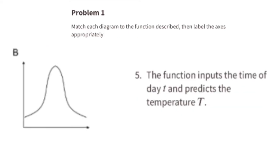Diagram B matches function 5. The function inputs the time of day, lowercase t, and predicts the temperature, capital T. The time, lowercase t, is the horizontal axis, or x-axis, and the temperature, capital T, is the vertical axis, or y-axis. This graph shows that as the time of day increases and the sun rises, the temperature increases. But as time moves forward later in the day, the sun goes down, causing the temperature to also go down.